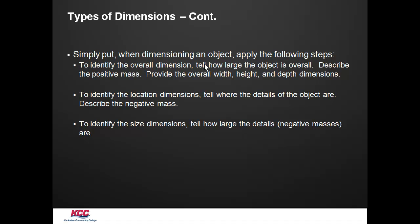Simply put, the overall tells us how big the object is, and its length, width, and height. We identify the location dimensions, where the details are. We are describing the negative mass. Positive mass is the actual stock of material. The negative mass is the manufacturing process that removes that. Then we identify the size dimension, which is our negative mass.